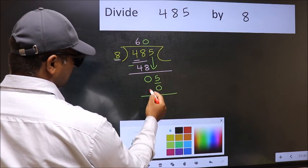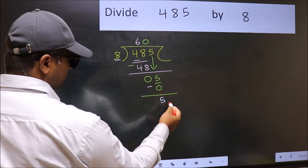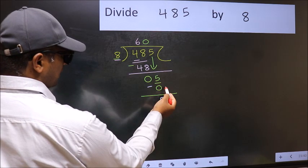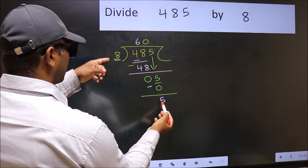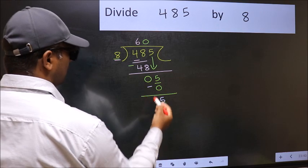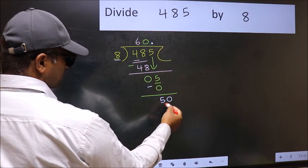Now we should subtract 5 minus 0, 5. Over here, we did not bring any number down. And 5 is smaller than 8. So now you can put dot and take 0. So 50.